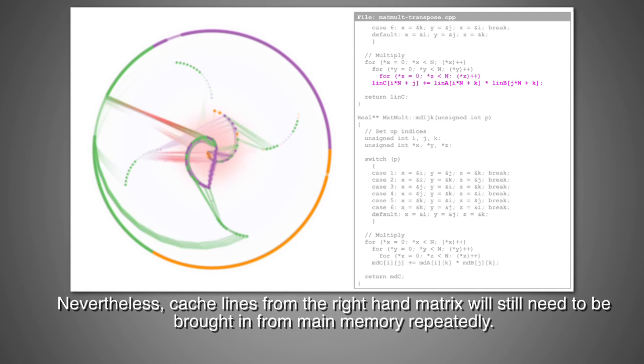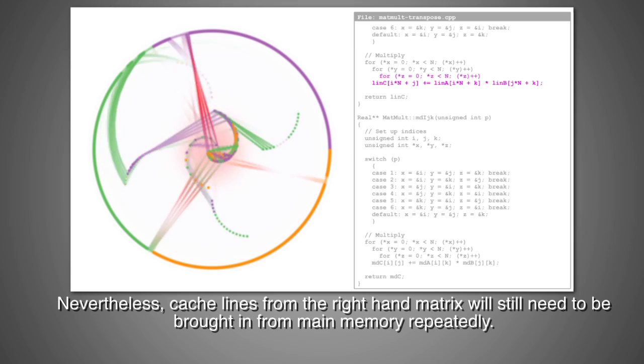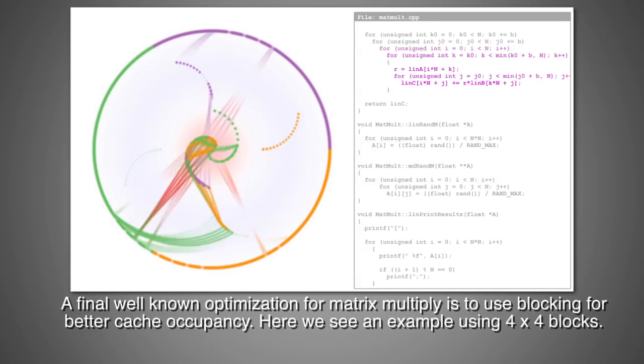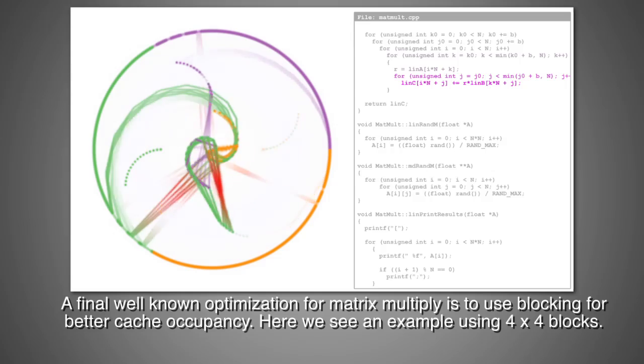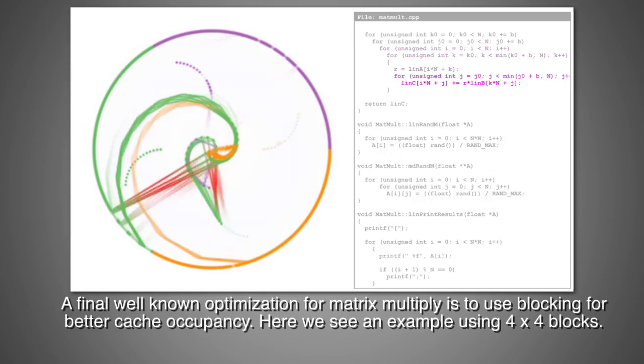Nevertheless, cache lines from the right-hand matrix will still need to be brought in from main memory repeatedly. A final well-known optimization for matrix multiply is to use blocking for better cache occupancy.